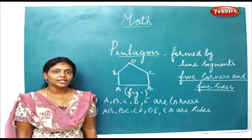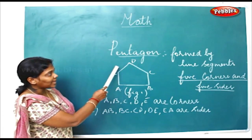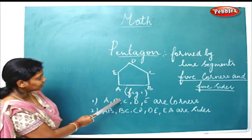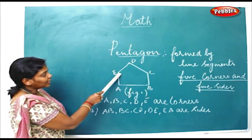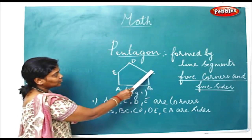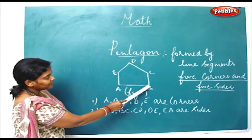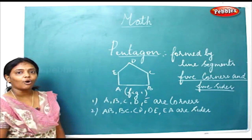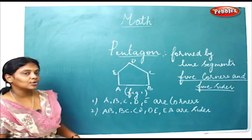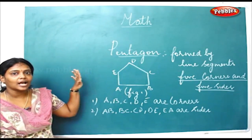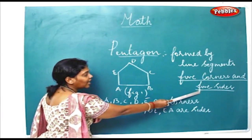Now what did we see earlier? We saw a square, a rectangle, a triangle. Now we are going to study about a pentagon formed by a line segment. As you can see, the pentagon has 5 corners and 5 sides — 1, 2, 3, 4, 5 corners and 1, 2, 3, 4, 5 sides. Here in this figure, A, B, C, D, and E are the corners, and A-B, B-C, C-D, D-E are the sides. So a pentagon is formed using 5 corners and 5 sides.